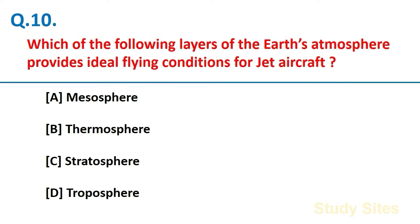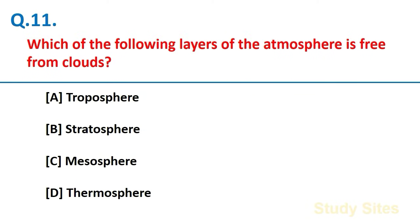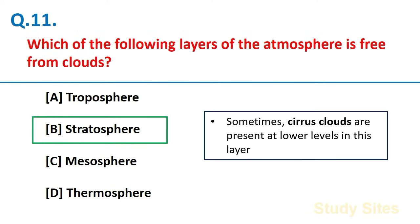Stratosphere lies beyond troposphere up to an altitude of 50 km. Presence of ozone layer are found in this layer. This layer is almost free from clouds and it is the most ideal for flying aeroplanes. Which of the following layers of the atmosphere is free from clouds? Stratosphere. But sometimes cirrus clouds are present at lower levels in this layer.